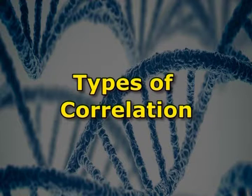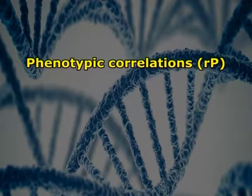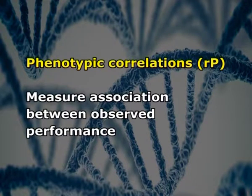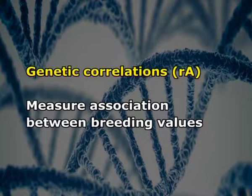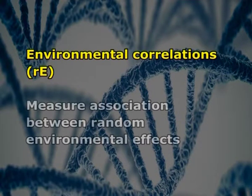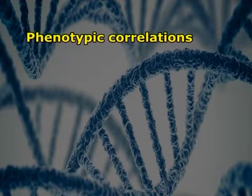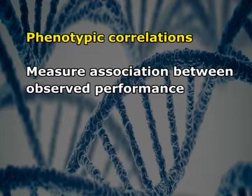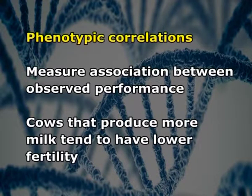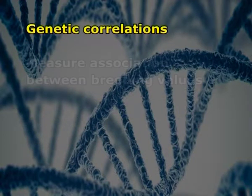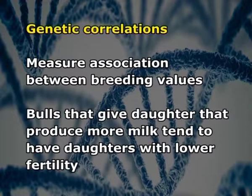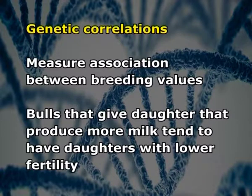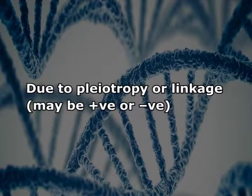There are three types of correlation: phenotypic correlation (RP) gives the measure of association between observed performance; genetic correlation (RA) gives the measure of association between breeding values; and environmental correlation (RE) gives the measure of association between random environmental effects. For example, cows that produce more milk tend to have lower fertility (phenotypic correlation). For genetic correlation, bulls that give daughters producing more milk tend to have daughters with lower fertility — this can be due to pleiotropy or linkage, and may be positive or negative.